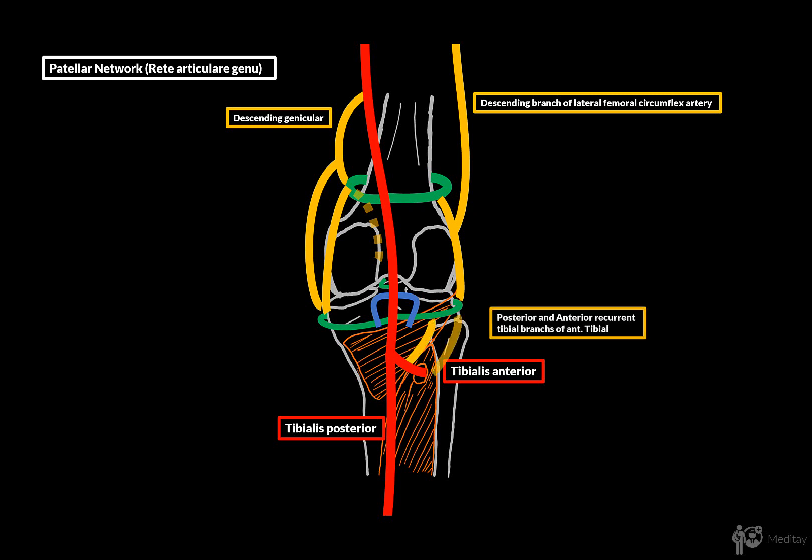From the inferior side, the anterior tibial artery will give off two branches called the anterior recurrent tibial branch from the anterior side, and a posterior recurrent tibial branch, which emerges right before the anterior tibial artery reaches the anterior side. These two arteries will contribute to the patellar network by anastomosing with the inferior lateral genicular artery.